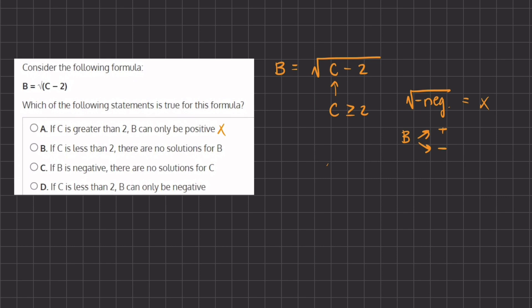Let's move on to B: if c is less than 2, there are no solutions for b. That statement is correct because we also proved that. If c is less than 2, we'll have a negative number inside of the radical, and that is impossible to get an answer.